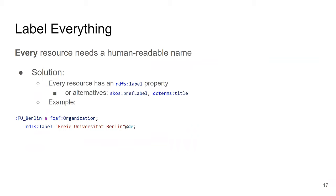The 'label everything' pattern relates to the fact that while IRIs are great for global unique identification, they are not good to show to end users. Every piece of data eventually ends up in some user-facing application or article, and you need to be able to show it to a human. So whenever you create an IRI, you should also have a human-readable label saying what that IRI actually represents.